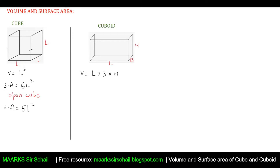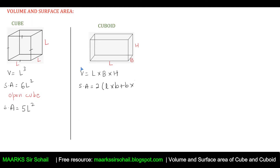For the surface area of a cuboid: in a cube all sides are the same, so all faces have the same area. But in a cuboid, the front and back are the same, both sides are the same, and the top and bottom are the same — just like a book. So the surface area is twice of (length × breadth + breadth × height + height × length).